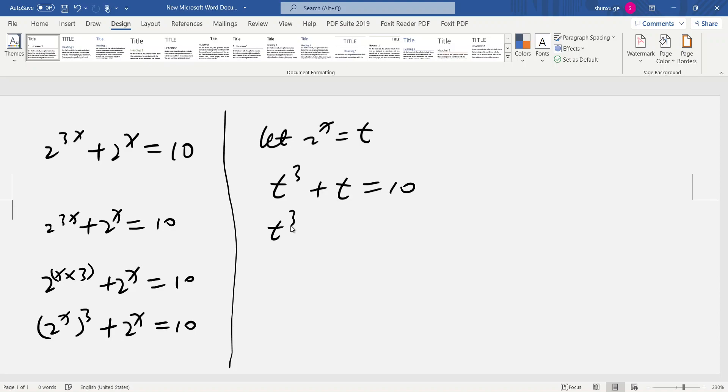Rewrite here: t^3 + t - 10 = 0. So we find some numbers. For 10, we make 10 into 2 numbers.